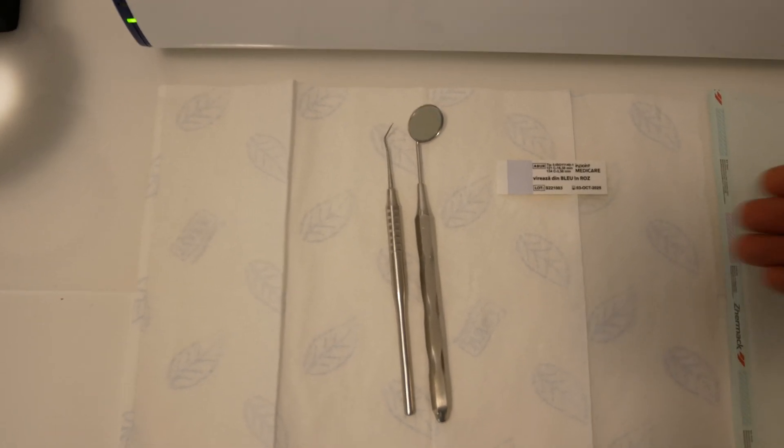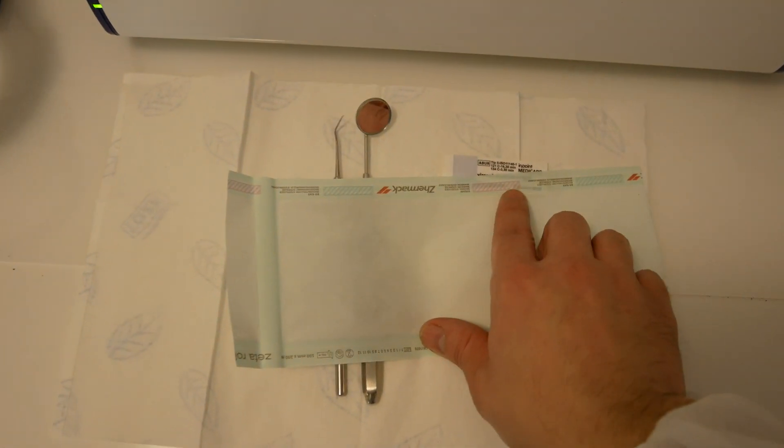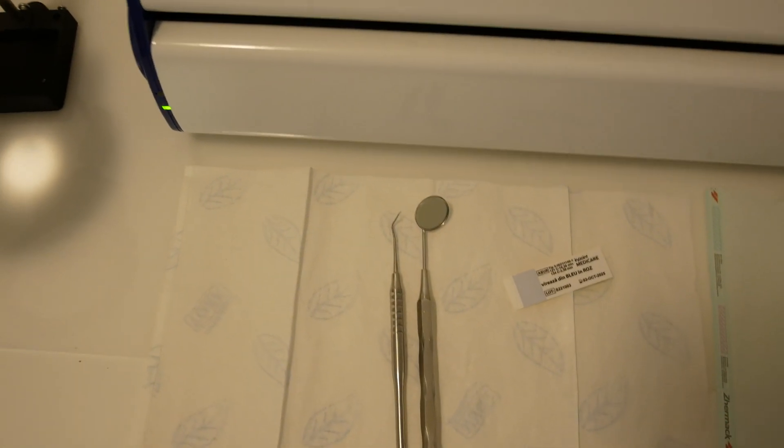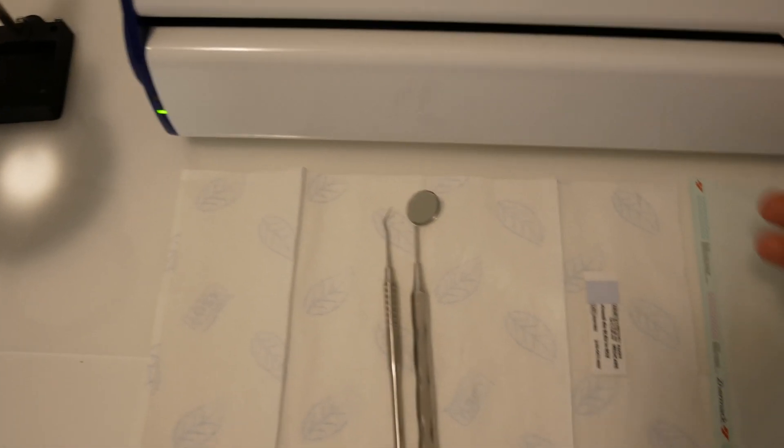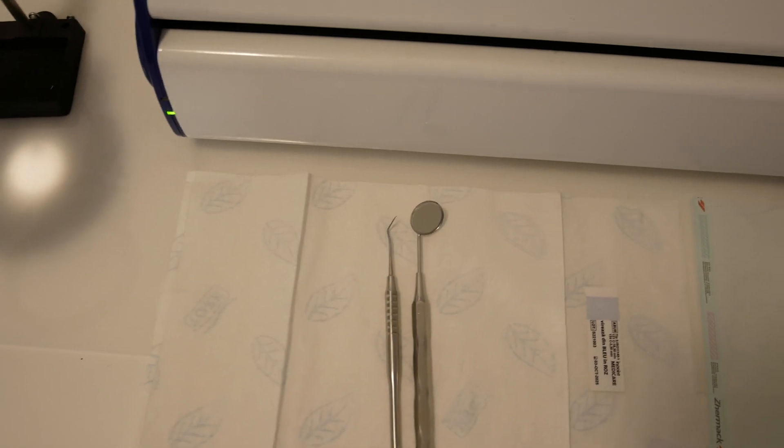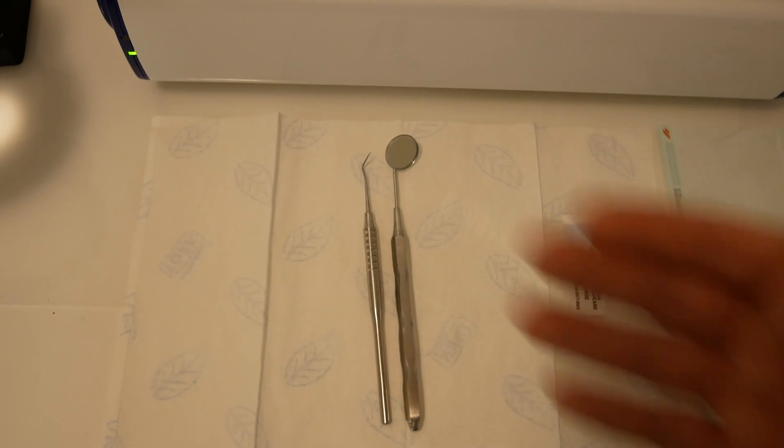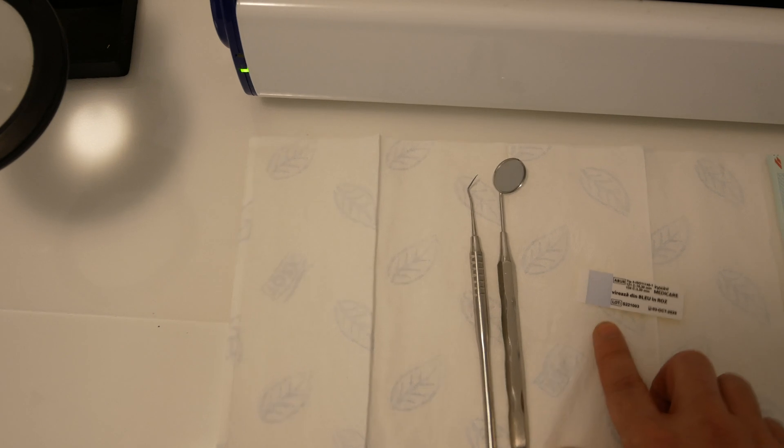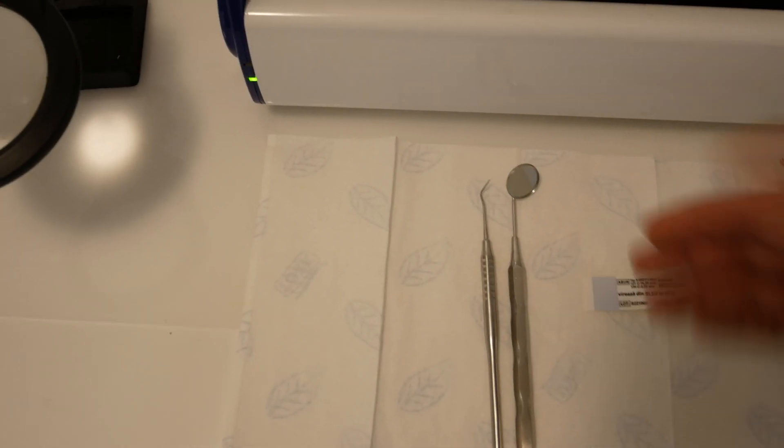The bag also has some indicators, but they're class 1. These indicators only show you that the bag has been in an autoclave and the outside of the bag has been sterilized. But it doesn't say anything about the inside of the bag and the actual instruments. When this changes color, you can be sure that the inside of the bag is sterile.